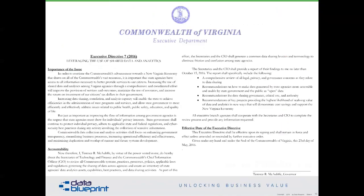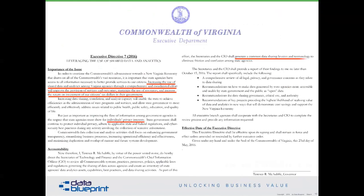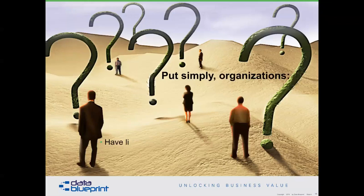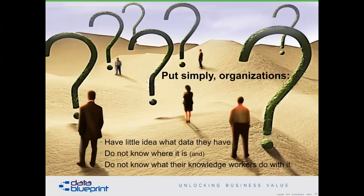Our former governor of Virginia put forth pieces that say you've got to do this because it's critically important — it influences people's privacy, and we need a common vocabulary. These concepts of best data management practices are becoming accepted in state and federal government, and that is important. Right now, most organizations have little idea what data they have. They don't have an inventory, they don't know where it is, they don't have a map to find it, and they don't know what their knowledge workers do with it.